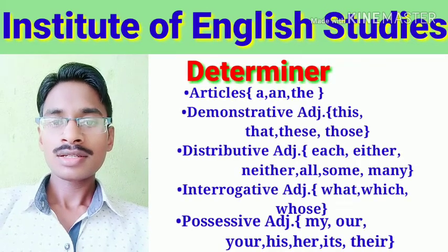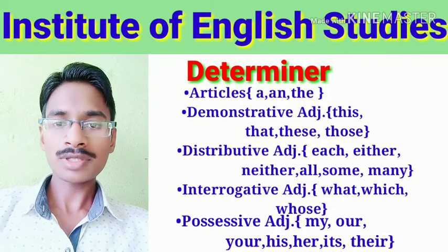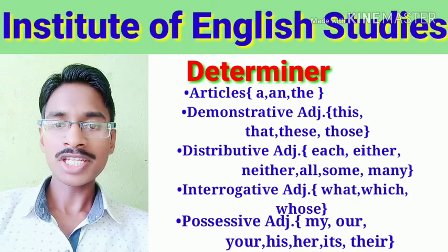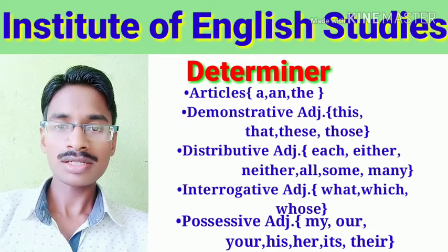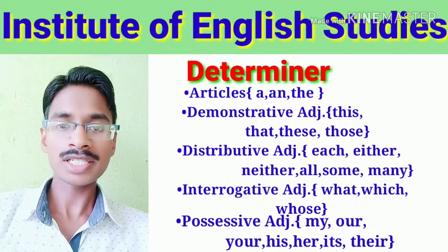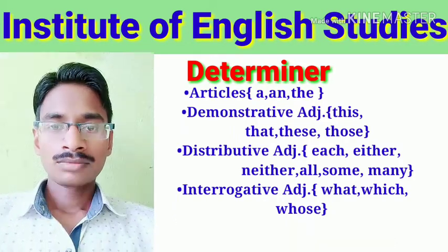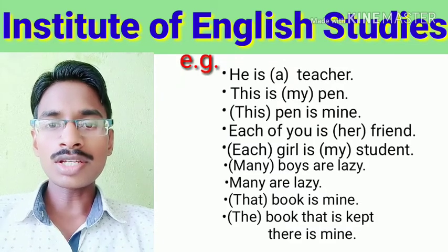Articles, demonstrative adjectives, distributive adjectives, possessive adjectives and interrogative adjectives come in the determiner. For example: He is a teacher.